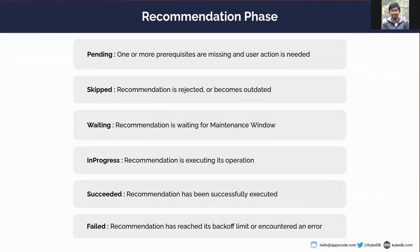Now let's talk about the possible recommendation phases. There are six possible phases. The first is pending — the recommendation is currently missing one or more prerequisites and user action is needed, such as needing human approval or having no maintenance window available. Skip means the recommendation was rejected by a human user or became outdated. Waiting means the recommendation is waiting for the maintenance window. InProgress means the recommendation is currently executing its operation.